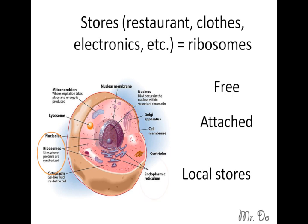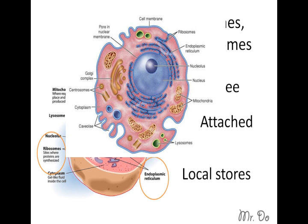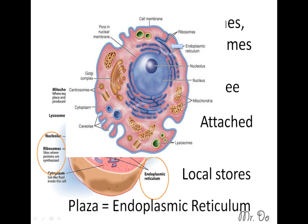Then there's the attached type — attached to the endoplasmic reticulum. You can see the ER with a bunch of little red dots, which are the ribosomes attached to it. It's like a mall where all the stores are gathered in one place. The ER is equivalent to a plaza where everything is gathered, versus the freely floating ribosomes.